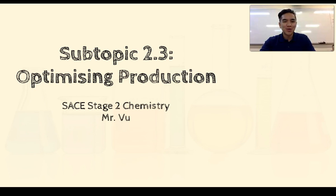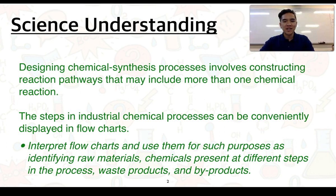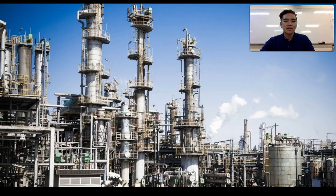Hey guys, welcome to subtopic 2.3 on optimising production. These will be our first science understandings. Designing chemical synthesis processes involves constructing reaction pathways that may include more than one chemical reaction. The steps in industrial chemical processes can be conveniently displayed in flowcharts. You'll need to be able to interpret flowcharts and use them for purposes such as identifying raw materials, chemicals present at different steps in the process, waste products, and by-products. So firstly, let's talk about the chemical industry.